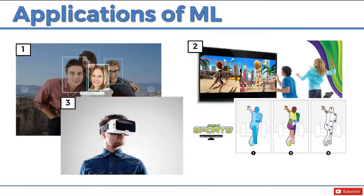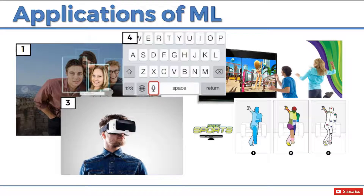Then there are virtual reality headsets where you turn your head and the picture moves. How does the headset know what to portray? That's a machine learning algorithm monitoring your actions and connecting them to the game or whatever you're looking at. Then on your phone — if you have an iPhone — there's a button where you can do voice recognition. When you click that button it recognizes what you're saying. That's a machine learning algorithm in action again.